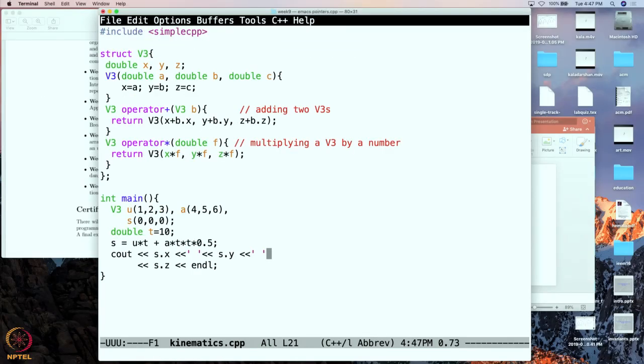So this is our file kinematics dot cpp. So inside this we have put in whatever we wanted. So this constructor and I guess I have ignored putting the simple constructor over here. But I guess it is not needed over here but we could have put that in as well.